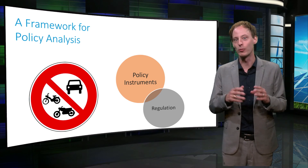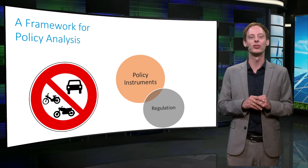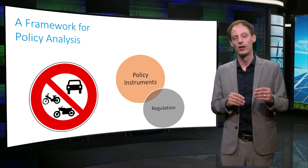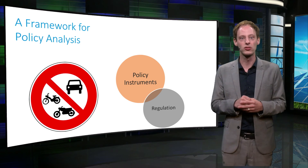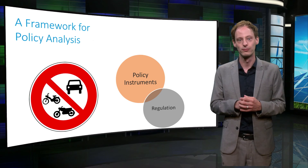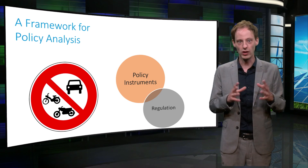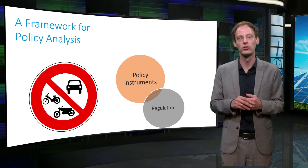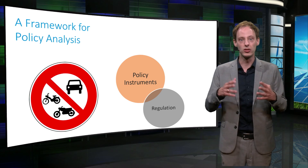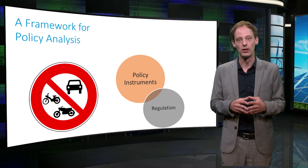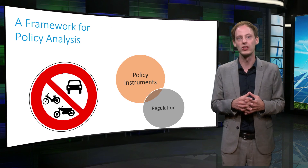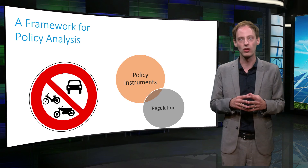If there are already good and affordable options to improve energy efficiency, then direct regulation can be an option. Energy performance standards and efficiency requirements are quite common. These instruments disallow the purchase or use of products performing worse than a particular standard. An example is the ban on incandescent light bulbs in the EU. Another is the introduction of environmental zones in many cities where only clean and efficient cars are allowed.